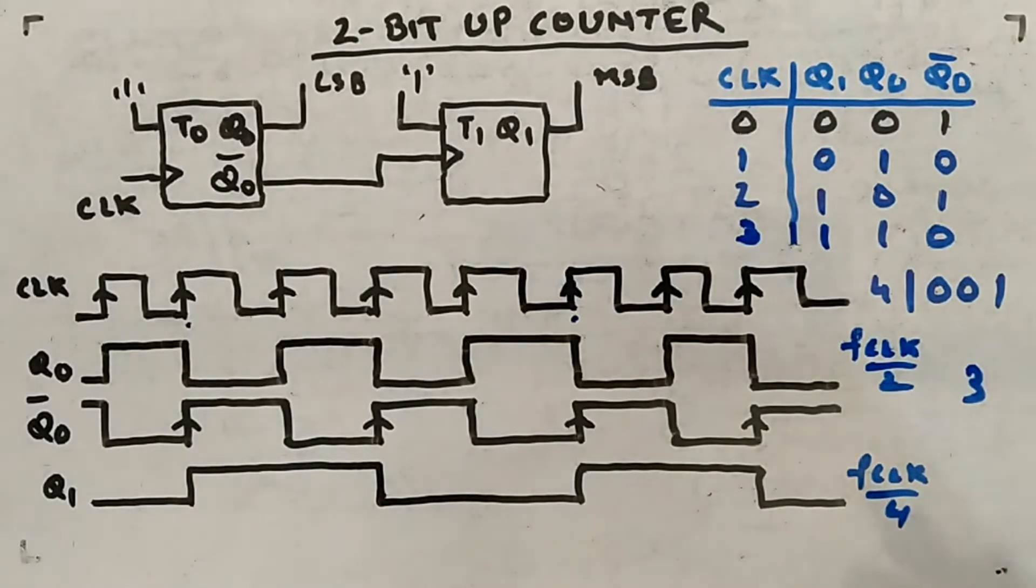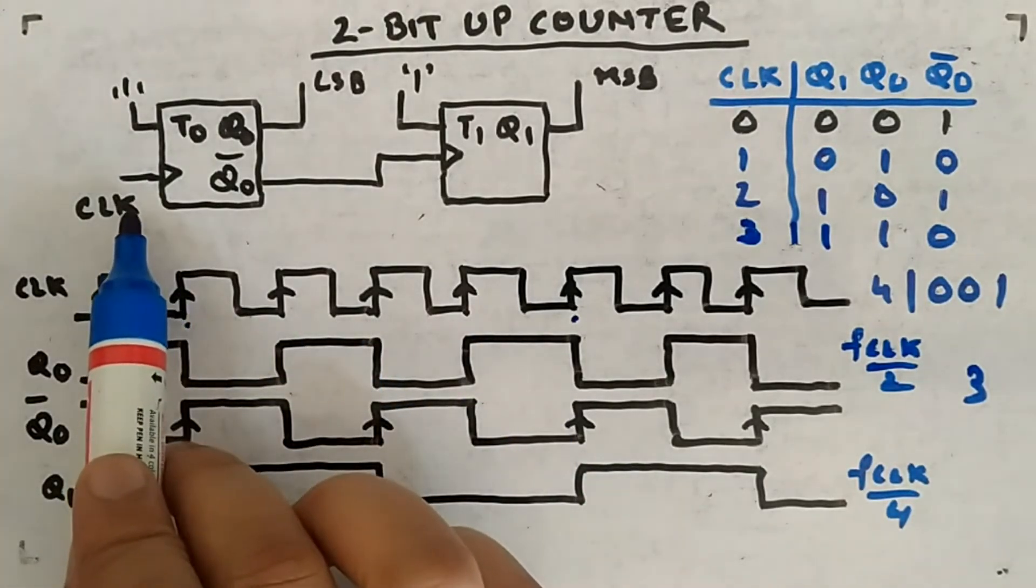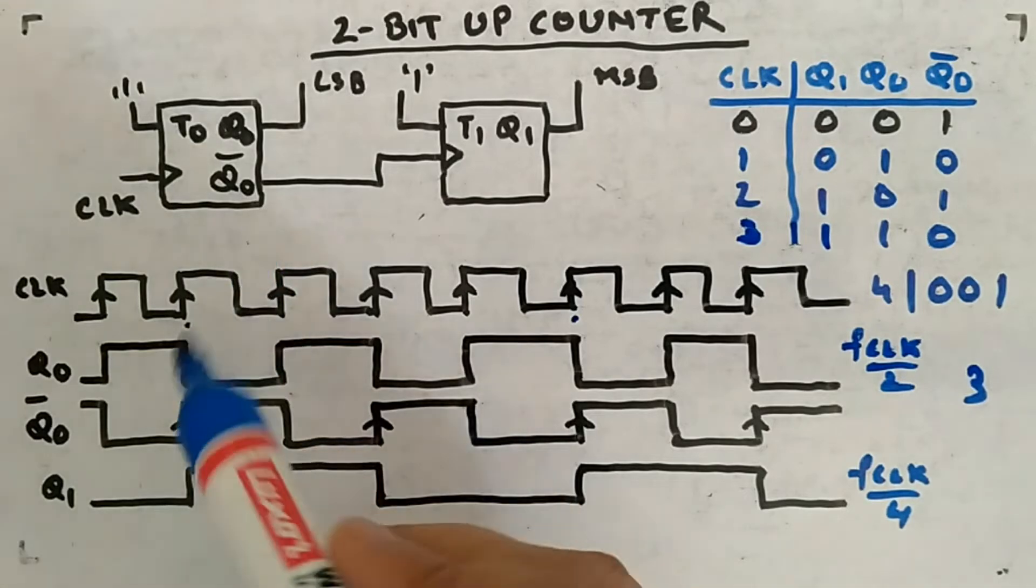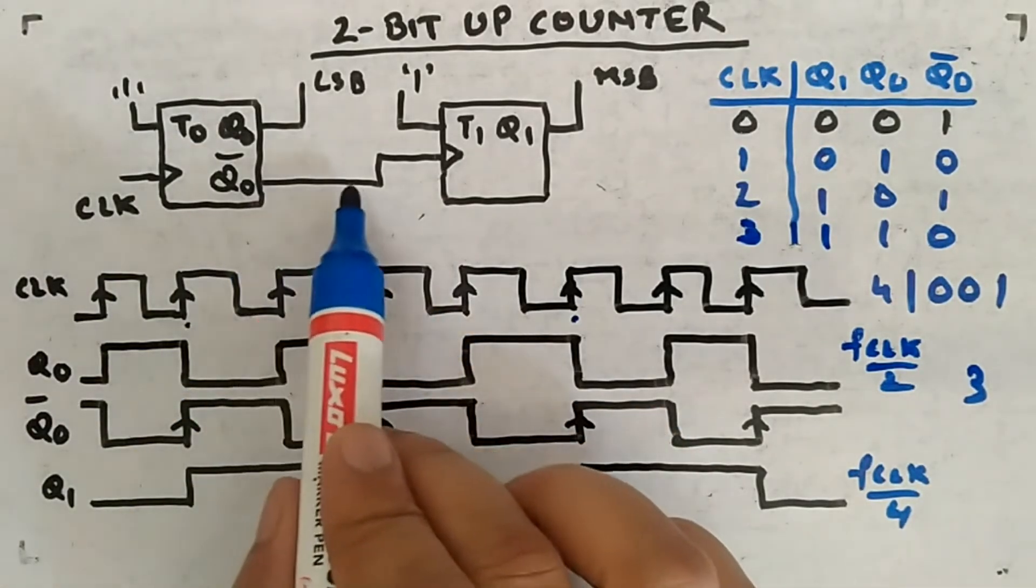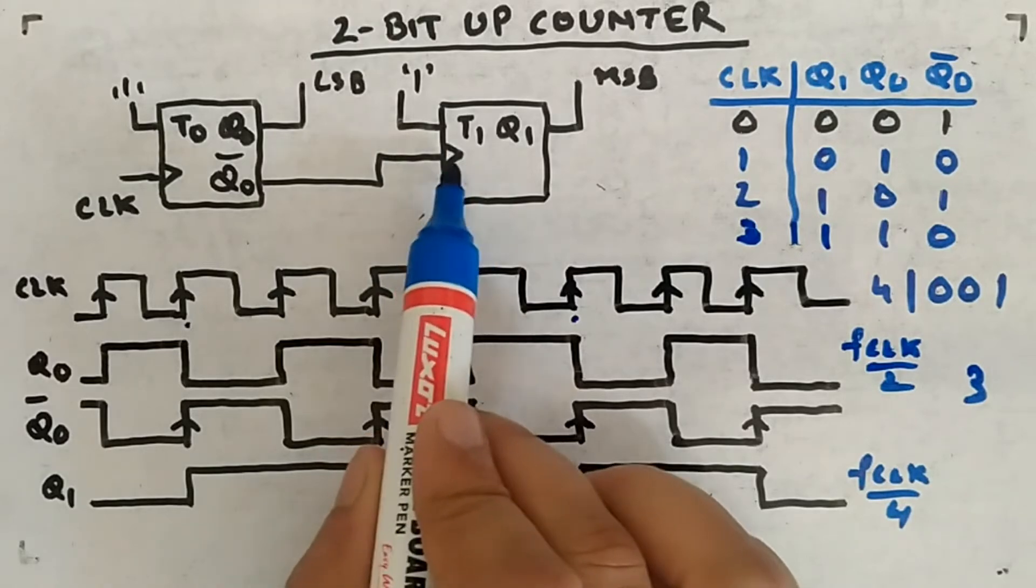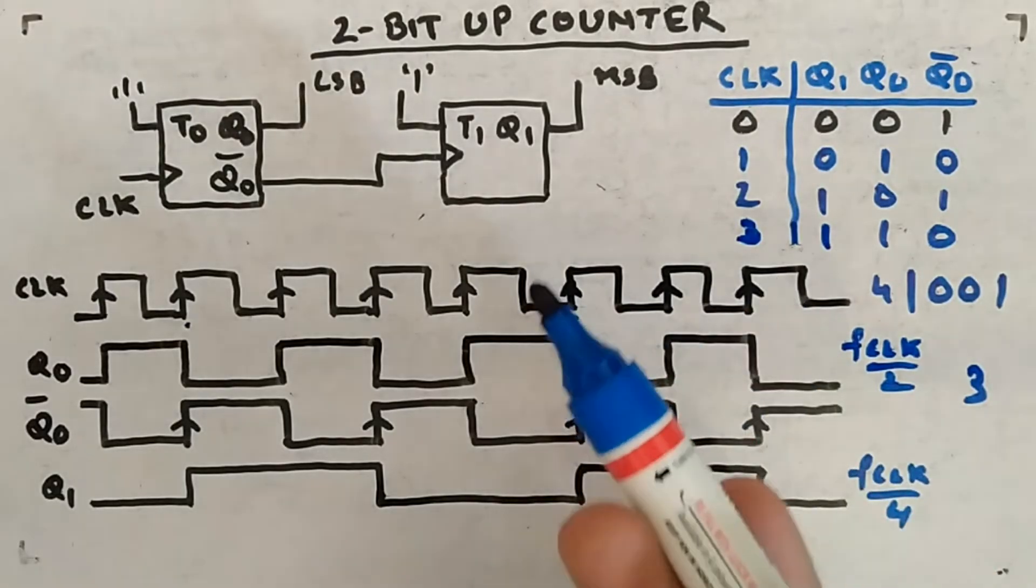Everything seems same. It's an up counter. What we have seen before, the only thing I did is I've changed the clock to positive edge. And you can see why when I did this, you have to connect Q0 bar to this clock. Then only it will behave as up counter. Now let's quickly look at the down counter as well. You might have guessed what I'll do, but still for the completeness sake I'll do it.